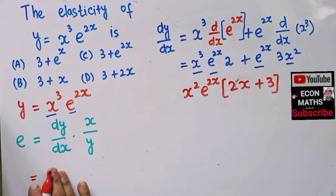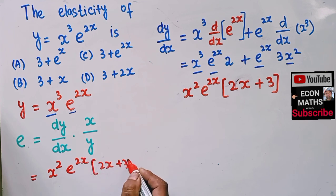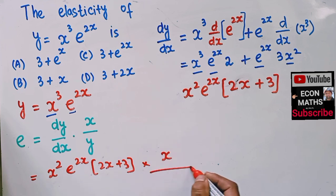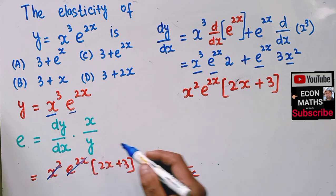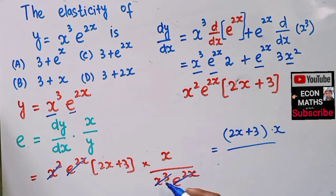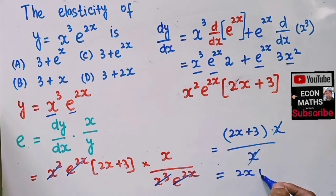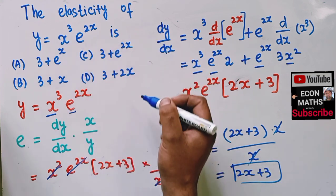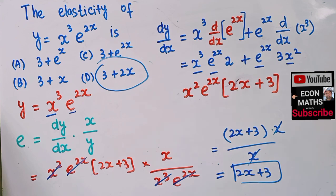Now using the elasticity formula, we multiply dy/dx by x/y. So elasticity = x²·e^(2x)·(2x + 3) times x, divided by y, which is x³·e^(2x). Here x² and x give x³ in the numerator, which cancels with x³ in the denominator, and e^(2x) also cancels. So we are left with 2x + 3 as the elasticity of this function. The correct option should be the fourth option.